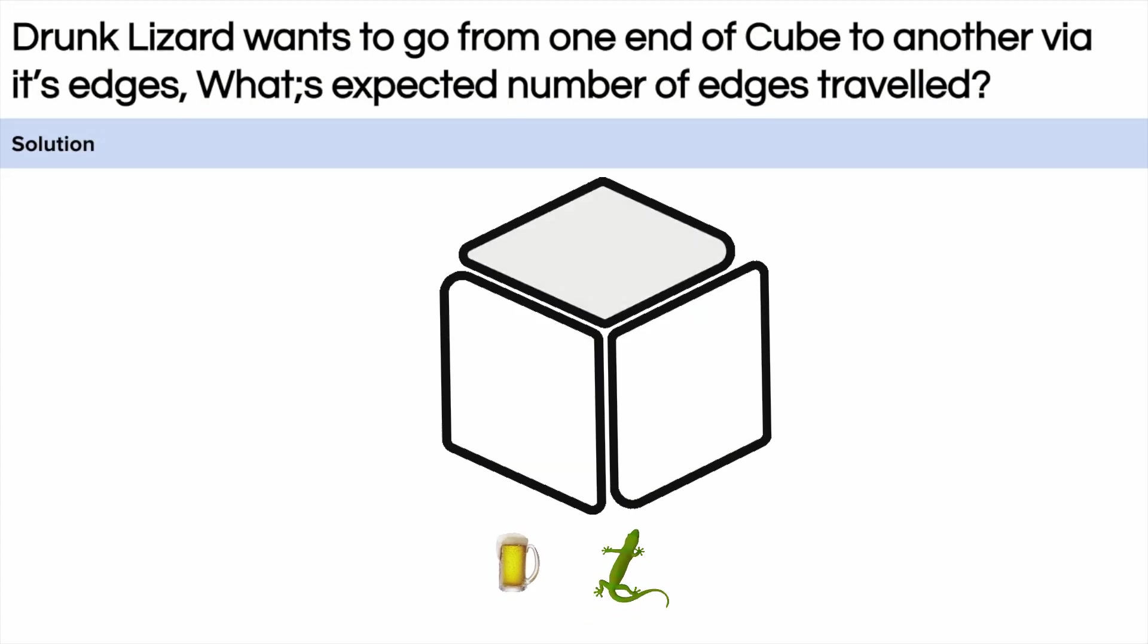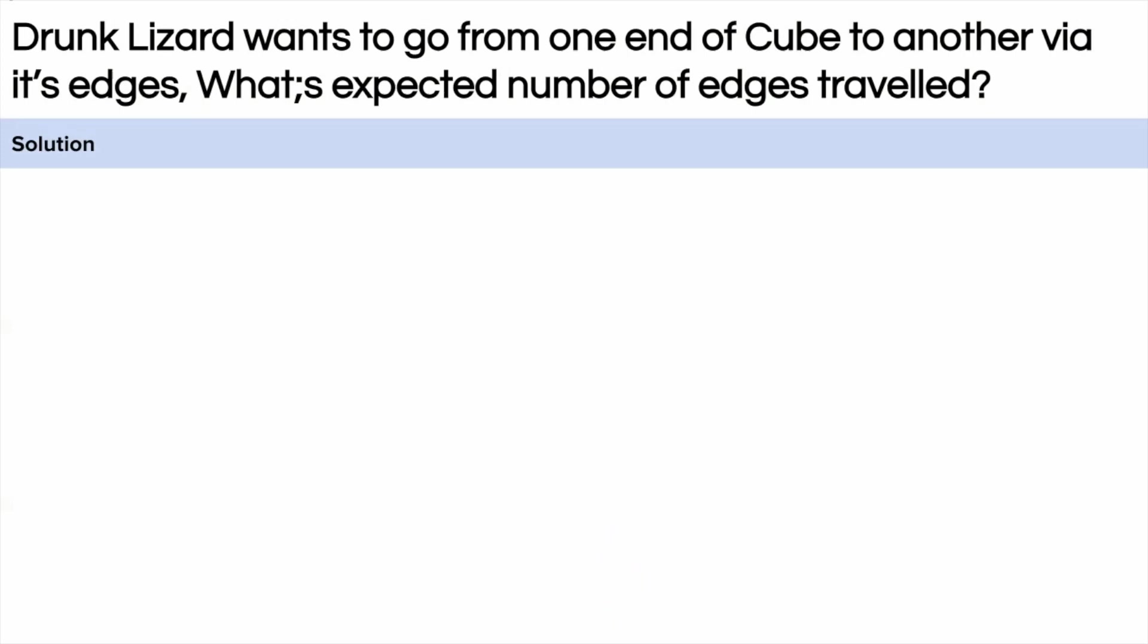Now you need to calculate on average how many edges the lizard has to walk to reach the other end of the cube. It is very important to note that this question is not asking for the shortest path but the average number of edges.